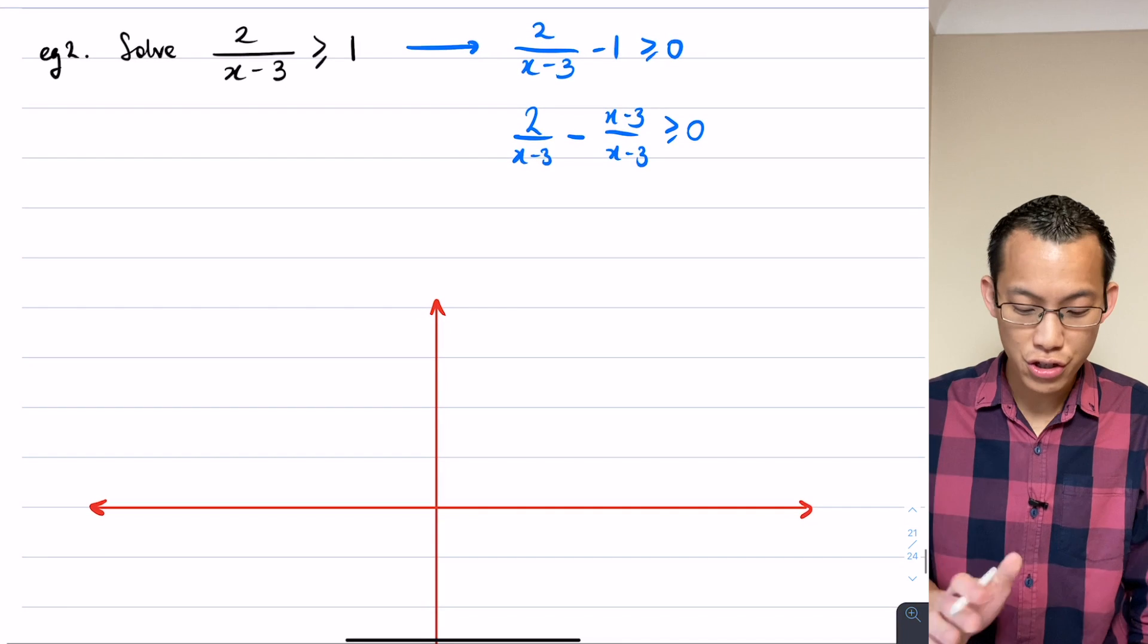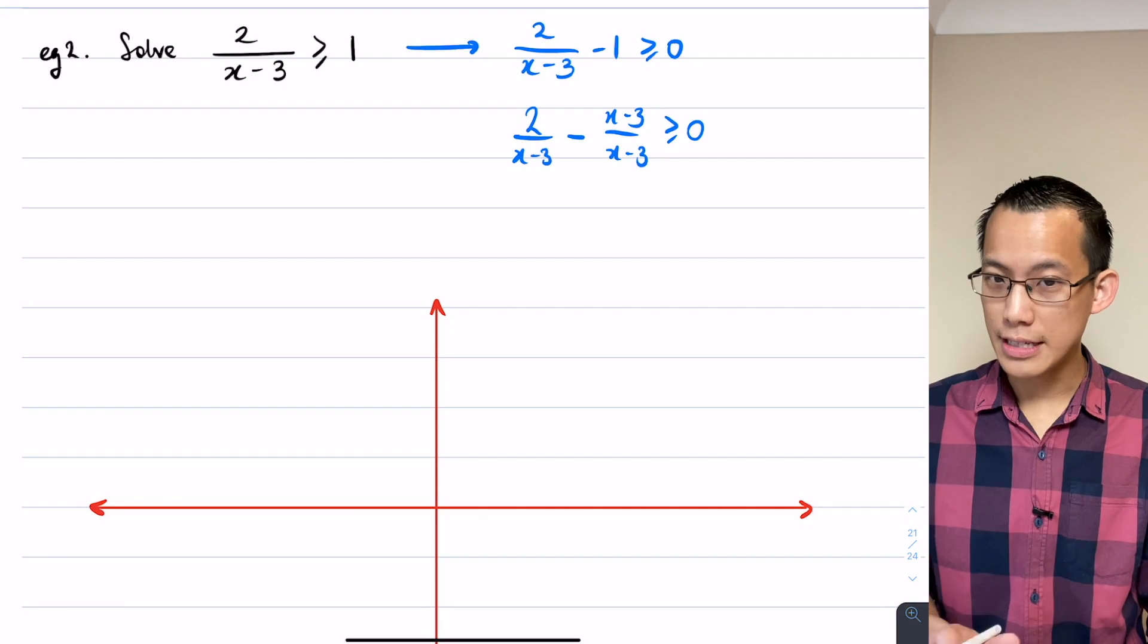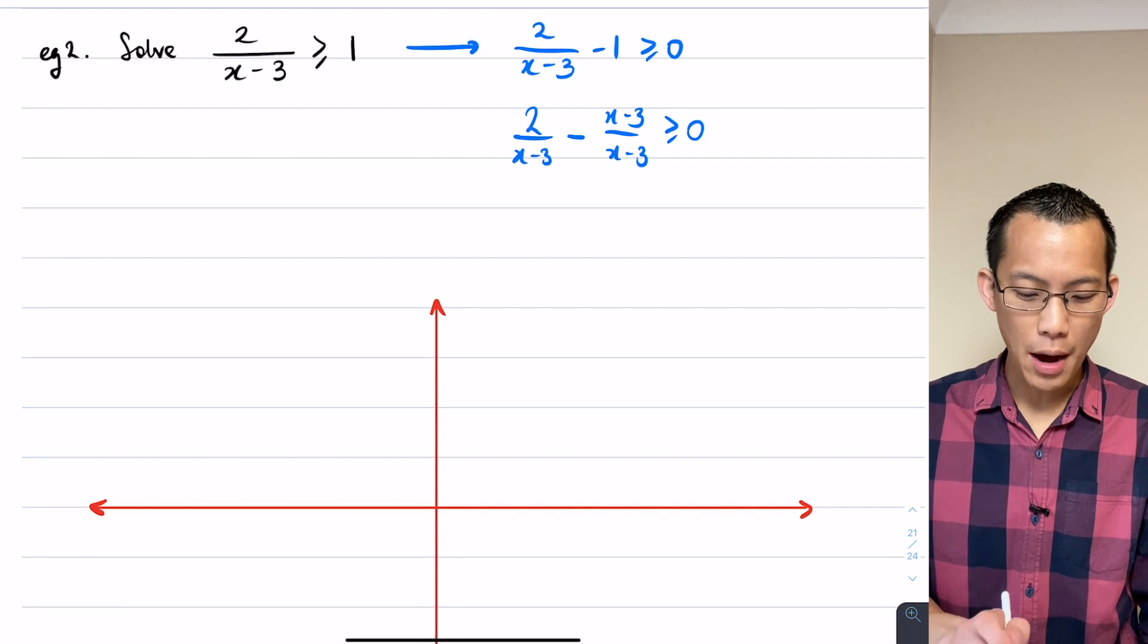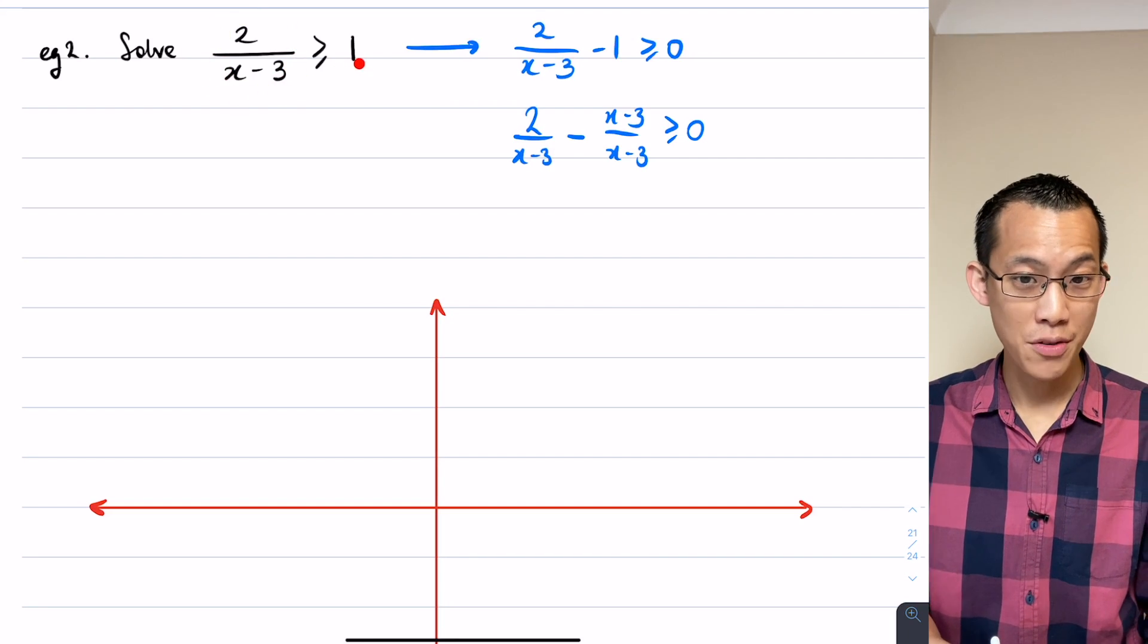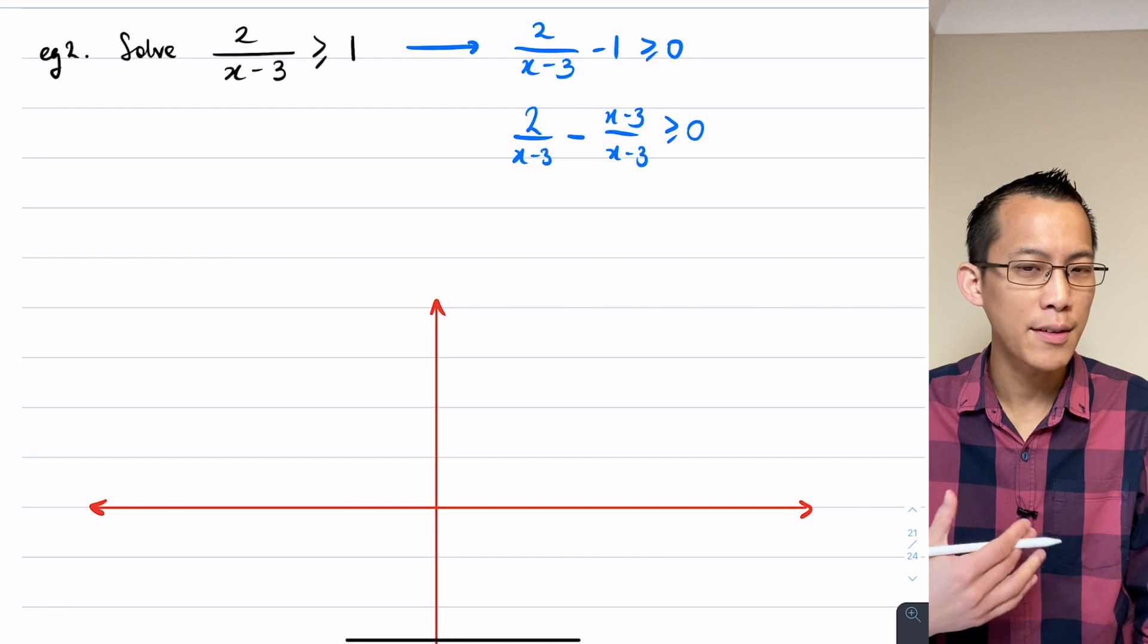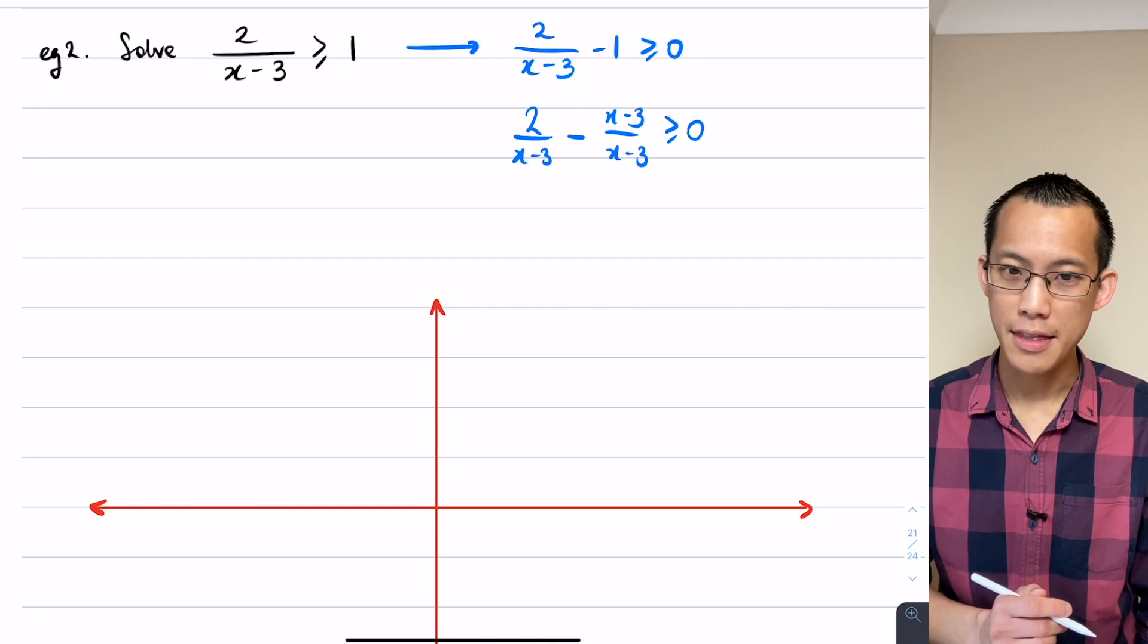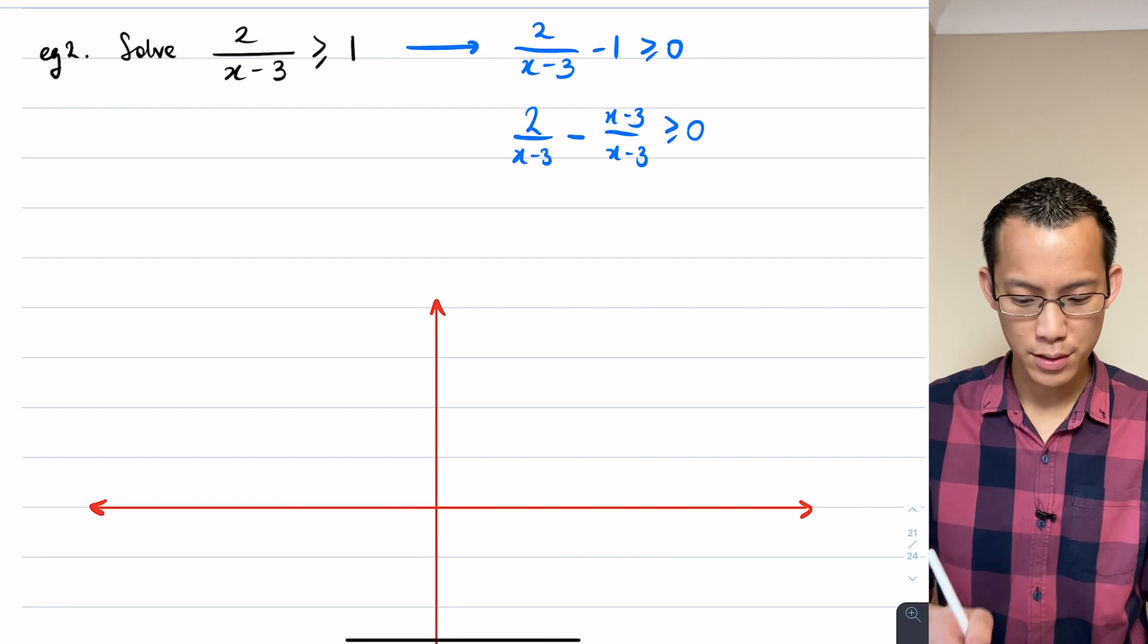However what I'm going to try and do is show you just like I did before, you can attack this either way. I'm just gonna try and draw this guy over here and then I'm gonna look for where it's greater than 1, just to illustrate that you need to have some flexibility in the approaches that you use.